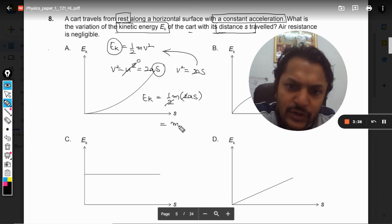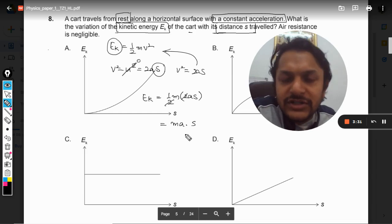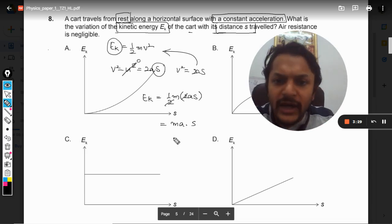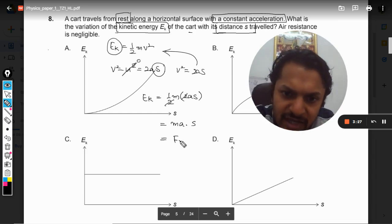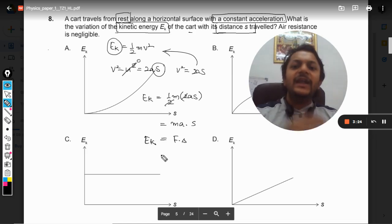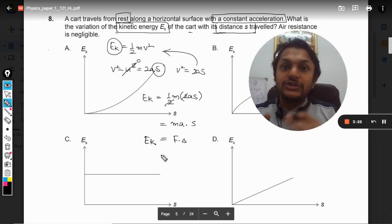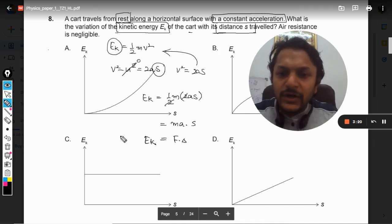So Ek is equal to half m into v square, which is 2as. So half and half gets cancelled, so it will become ma into s. And because the acceleration is constant, F is also equal to ma. So we can always reach this conclusion that kinetic energy is equal to force into displacement, which is work done.